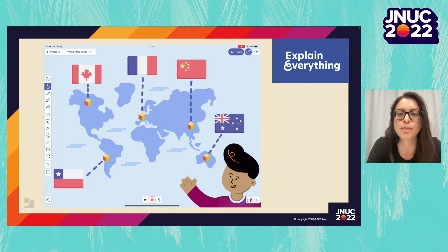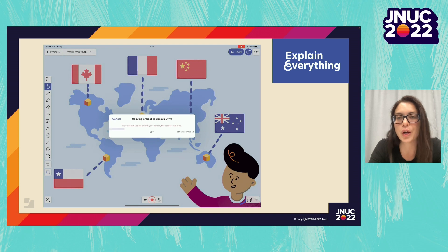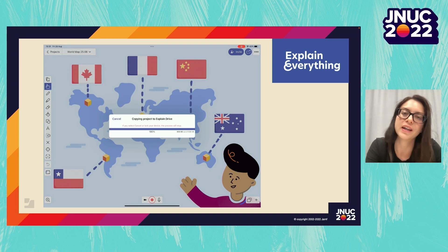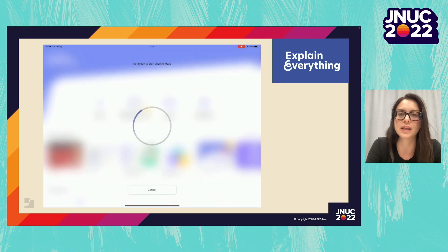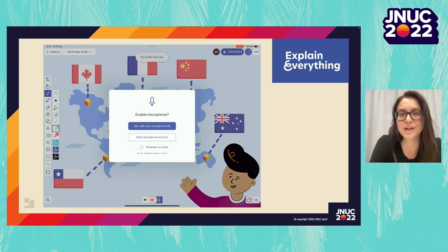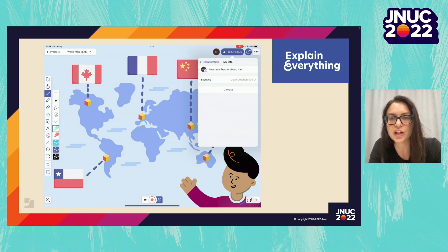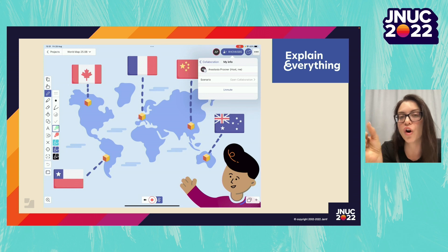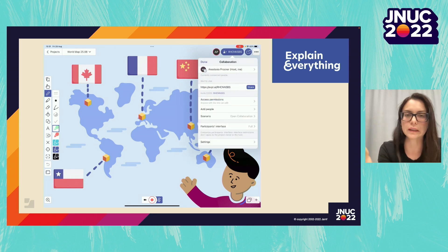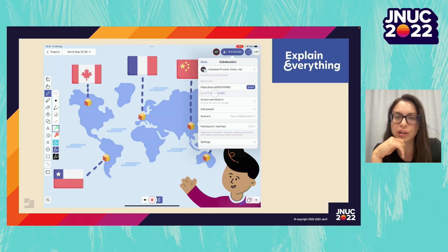The second use case is collaboration, which can be synchronous or asynchronous in Explain Everything. When you start with a local project, it's super easy to transform it into a cloud project — just tap invite in the top right-hand corner. Within seconds, the project is moved to the cloud and is accessible to anyone logged in with internet from pretty much any device. Once inside the cloud project, a code appears that can be shared as a link; anyone using that code or link will enter and be able to edit the project with you in real time.